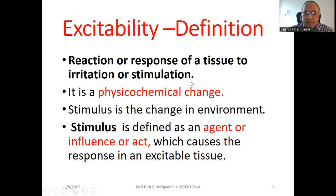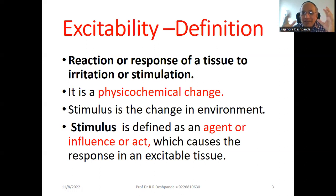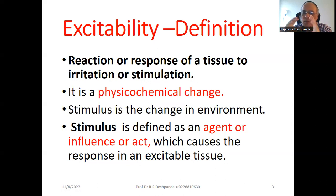The definition of excitability is: the reaction or response of a tissue to irritation or stimulation. Stimulation may be chemical, physical, electrical, or electromagnetic — any type. This results in physicochemical changes in the muscle — some physical changes and some chemical changes.